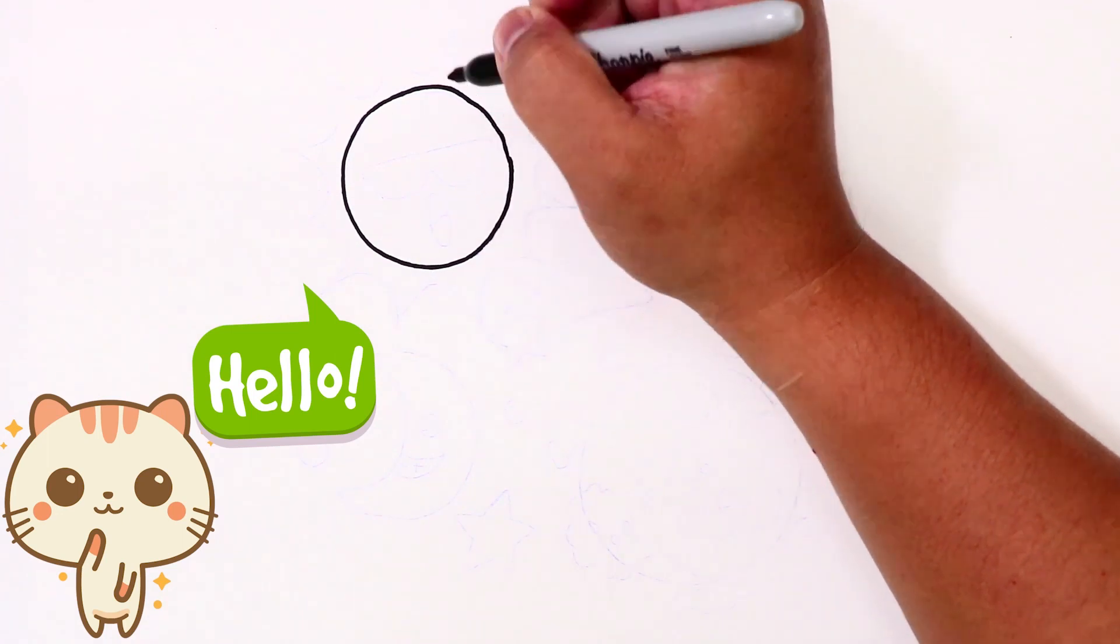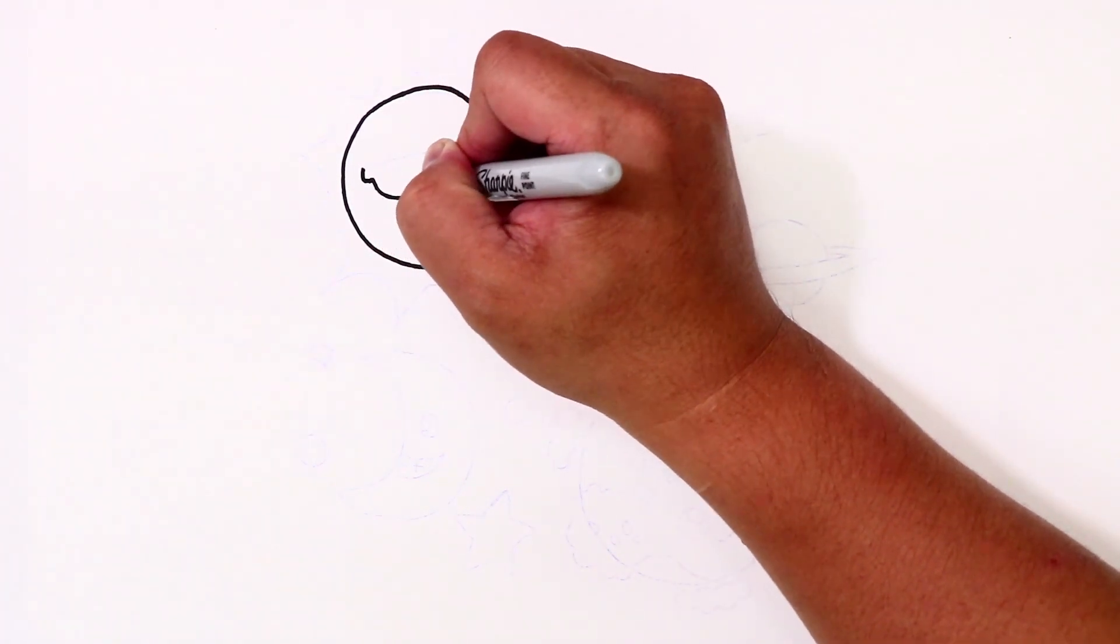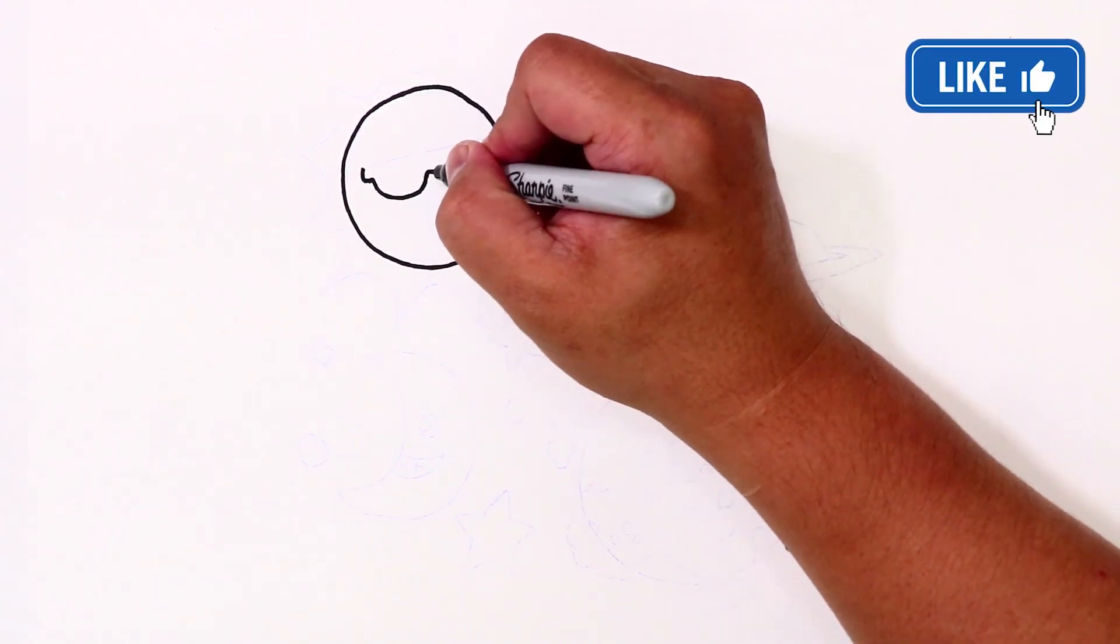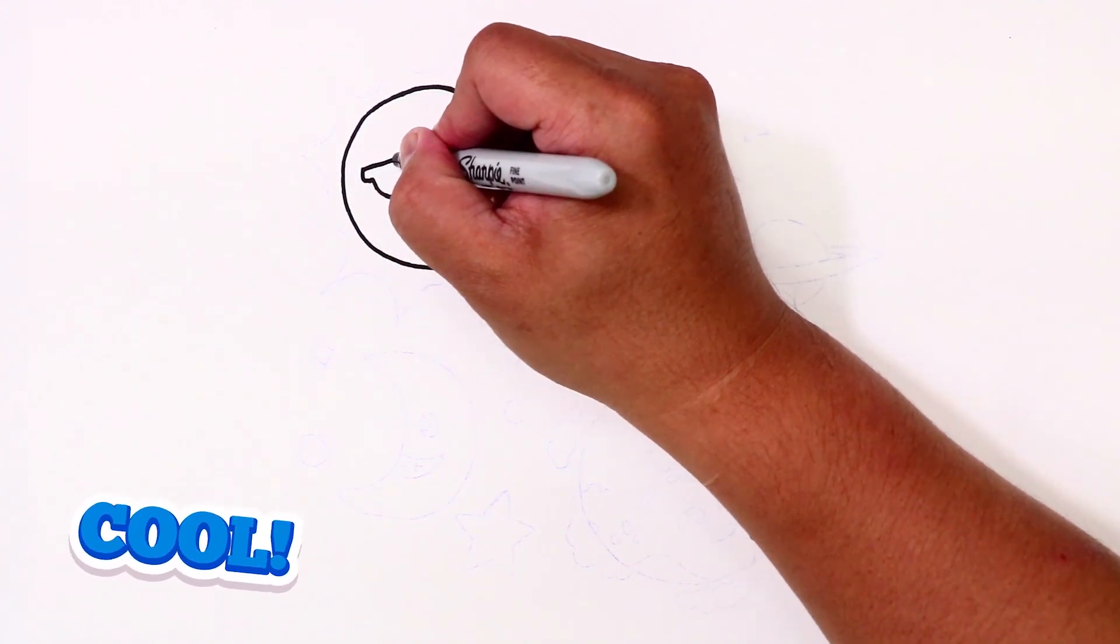So of course we're going to start with a round shape, a circle, and we're going to go from there. As we do this drawing, make sure you color it in any color you want. You don't have to follow along exactly like I do.